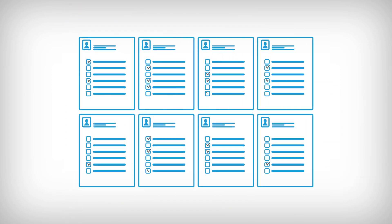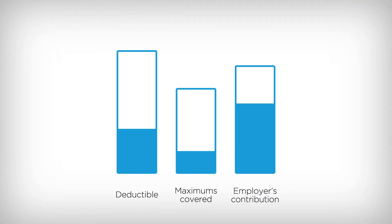So why does your brother-in-law Richard's group insurance plan cost less? Well, there are about as many plans as there are group insurance contracts. Therefore, the deductible and maximums covered can vary widely from one group to another.